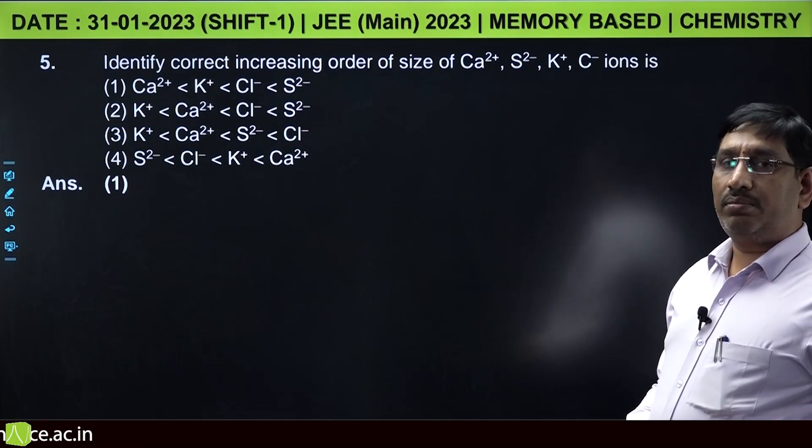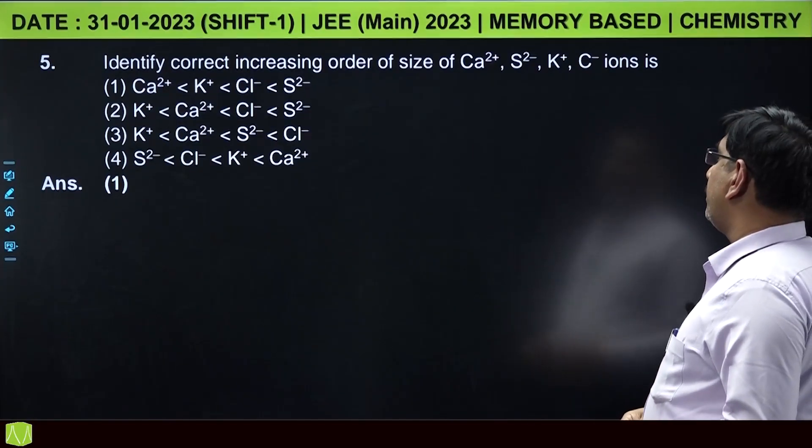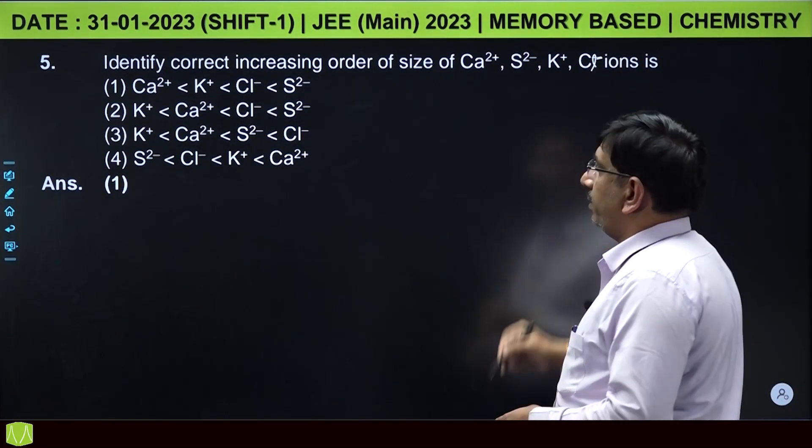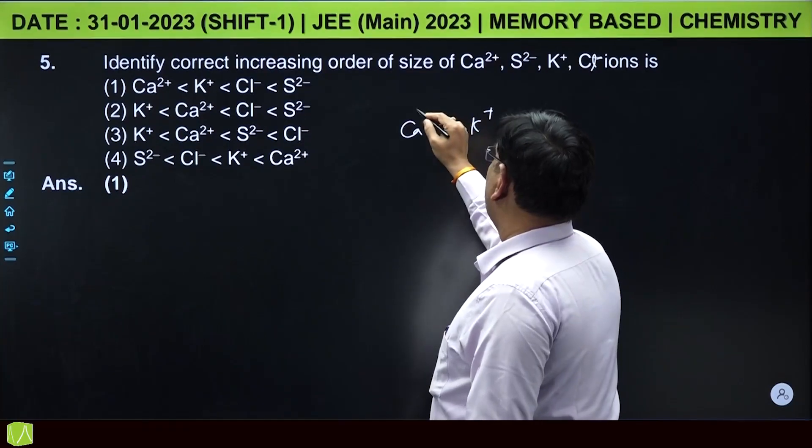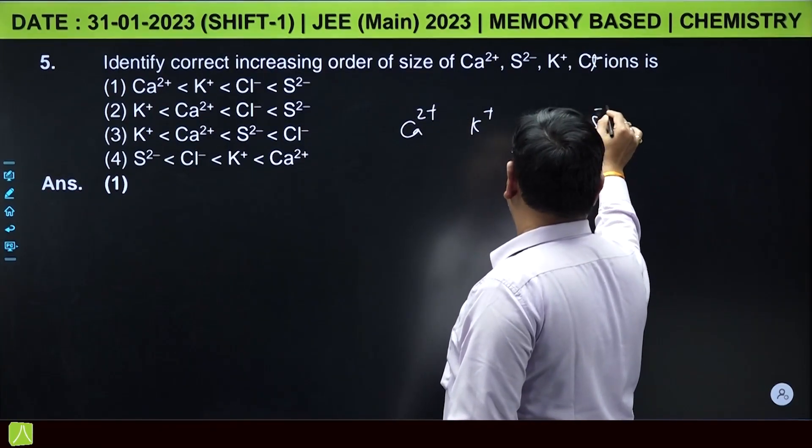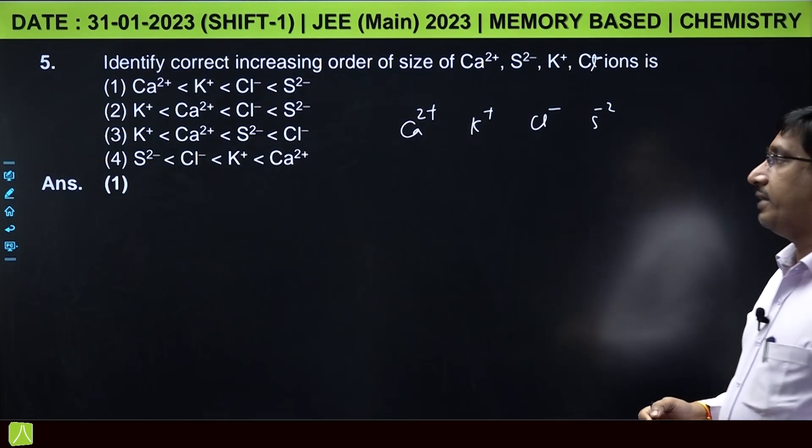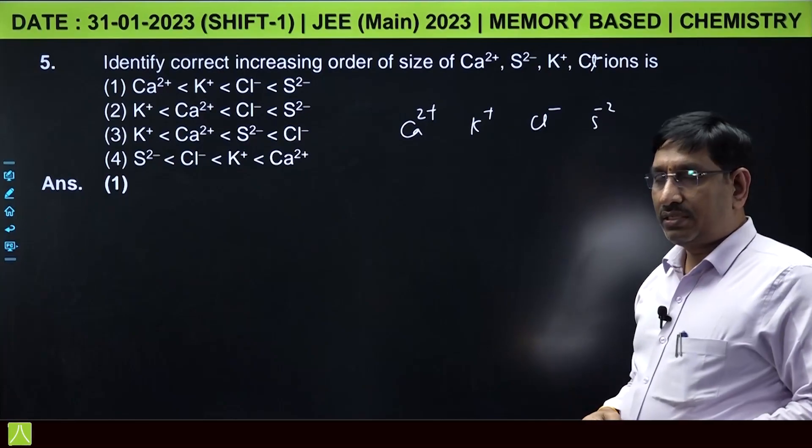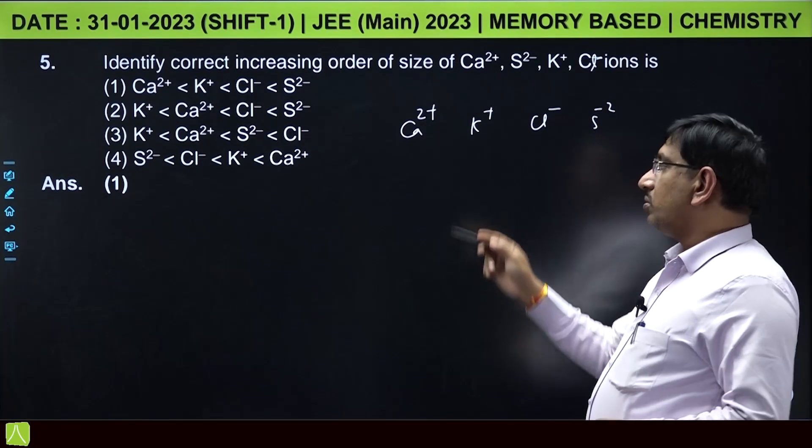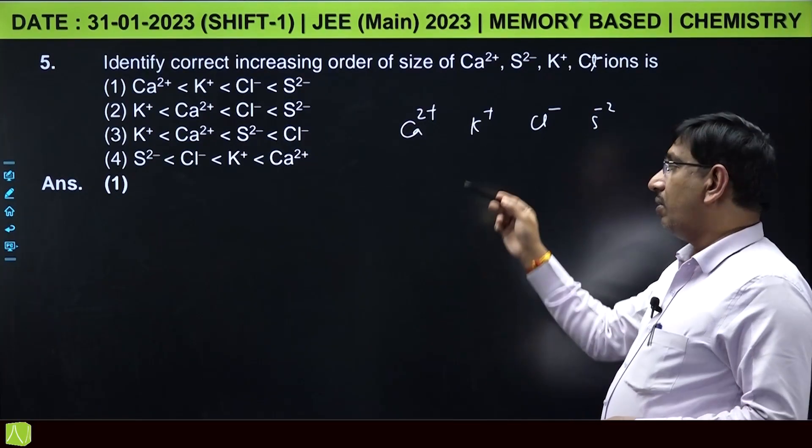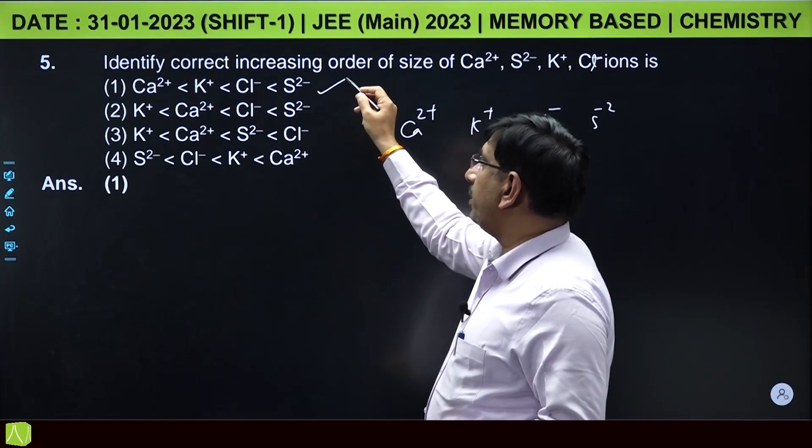Next, this is the question from periodic table. Identify correct increasing order of size of calcium, sulfide, potassium, and chloride ion. Here you can observe calcium, potassium, Cl minus, sulfide, and these are all isoelectronic species. In the isoelectronic species, as the negative charge increases size increases, and as the positive charge increases size decreases. So among these ions, calcium ion, potassium, Cl minus, and S minus 2, the correct increasing order is the first one.